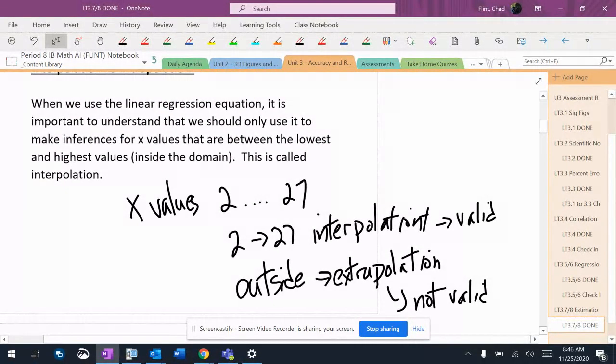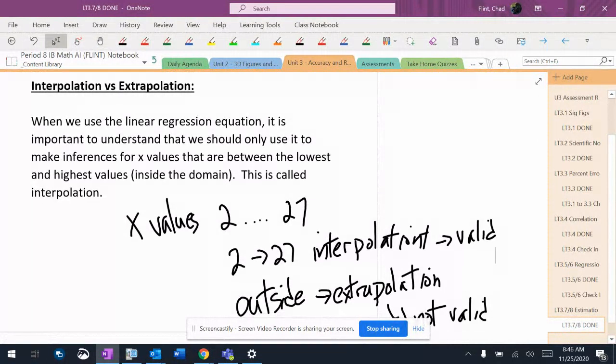When you get asked a question that says use your linear regression equation to make an estimation for some value, and then it asks would this be a valid process or valid estimation, you simply need to say yes because of interpolation or no because of extrapolation. You can expand on it more than that, but you do not need to. Just using those exact words is all you need to be able to do.